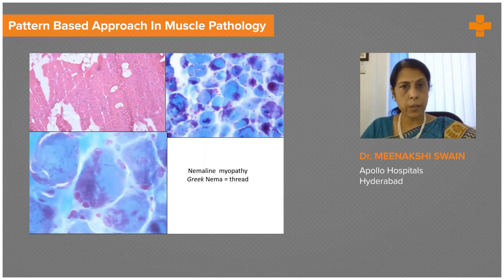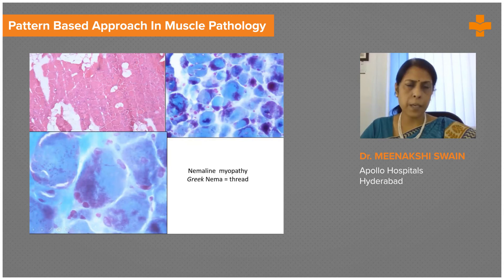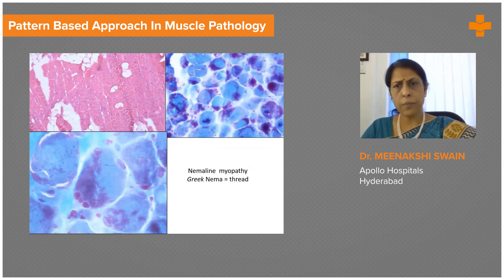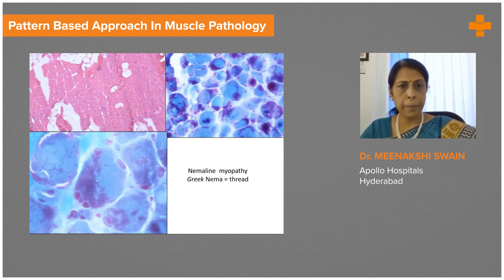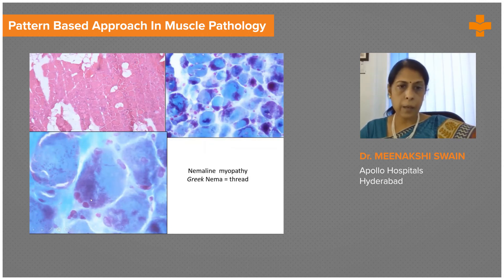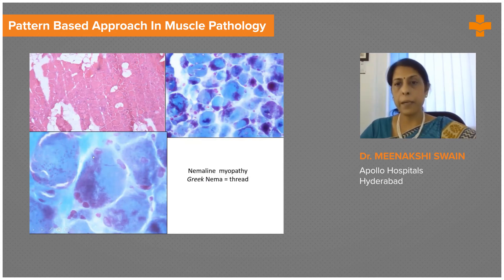This is a biopsy of a young child where the H&E, except for mild variation in fiber size and some adipose tissue infiltration, doesn't show too much. But there's a beautiful appearance of rods seen on the Gomori trichrome stain — these red, small rods and dot-like inclusions, shown here under oil immersion. This is a typical picture of nemaline myopathy.